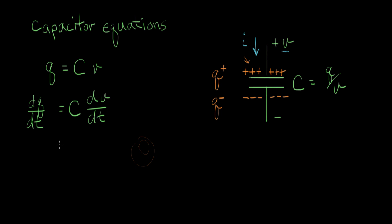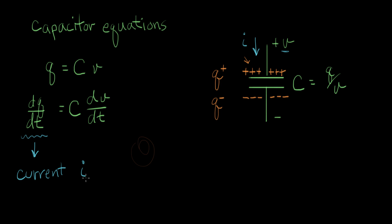Let's look at this expression: dQ/dt — change of charge with change of time. That's equal to what we mean by current. That is current, and the symbol for current is I. So dQ/dt is current, essentially by definition. We give it the symbol I, and that's going to be equal to C·dV/dt.